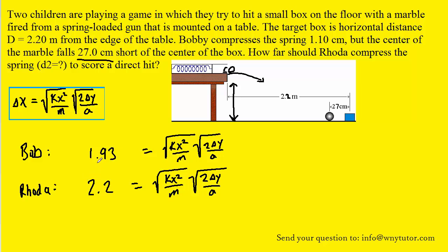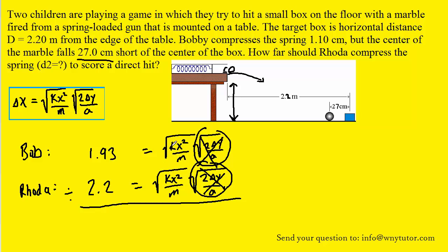The next step is a neat algebraic trick. We have these two equations stacked on top of one another, and we can divide them — that's perfectly permissible. Conveniently, the leading cluster of terms divided by itself equals one, so they cancel out. The k's will cancel because they're the same spring constant, and the masses of the marble are the same since they're launching the same marble. We do have to be careful with the x's: Bobby is compressing his spring by 1.1 centimeters, but Rhoda is compressing hers by a different distance, so those will not cancel. We plug 1.1 in for Bobby and leave Rhoda's compression as x. Because of the square root and the squaring, those cancel, leaving just x over 1.1.